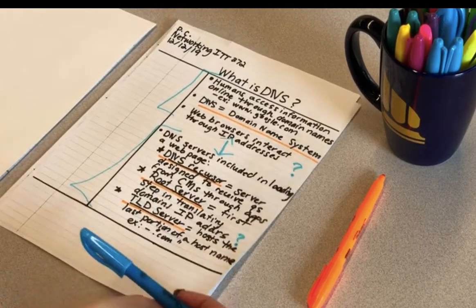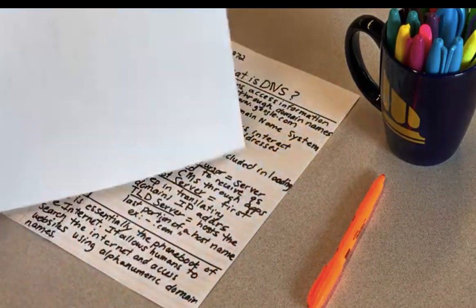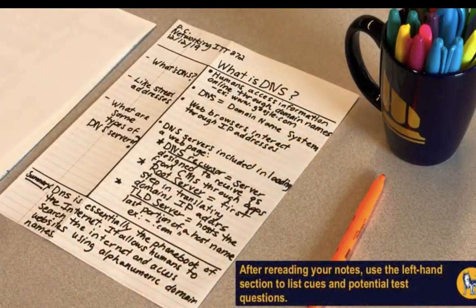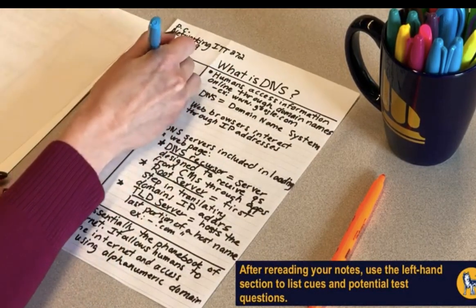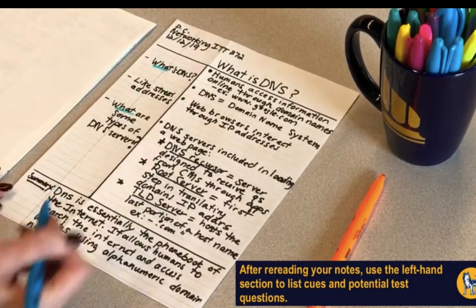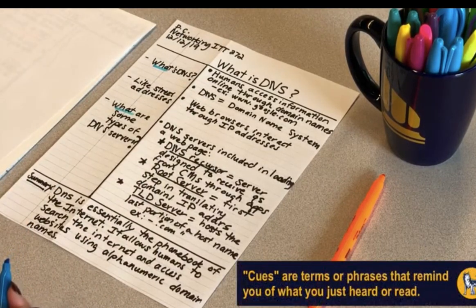As soon as possible after the lecture or reading, preferably within 24 hours, take the time to reread your notes. Pull out the main ideas or key facts from the right-hand section. Predict possible exam questions, summarize ideas, and clarify terms. Write this information in the left column.